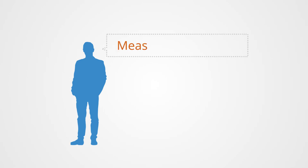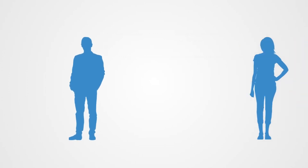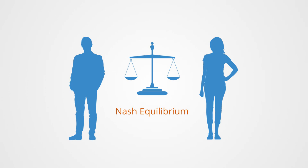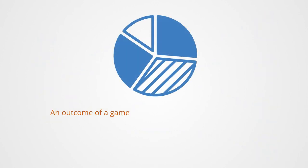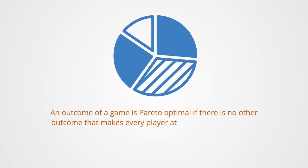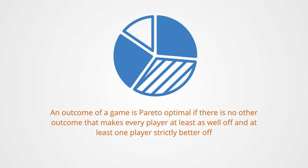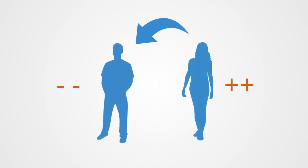Pareto optimality is a measurement of efficiency named after Vilfredo Pareto. Whereas Nash equilibrium is a solution concept of non-cooperative games, Pareto optimality in game theory answers a very specific question of whether an outcome can be better than any other. An outcome of a game is Pareto optimal if there is no other outcome that makes every player at least as well off and at least one player strictly better off. That is to say, a Pareto optimal outcome cannot be improved upon without hurting at least one player.